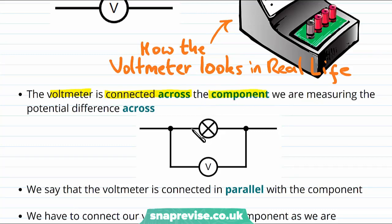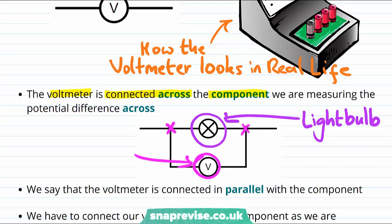So let's say we want to know the potential difference across a light bulb. Then we take the voltmeter and we connect it across this component. Another way of saying this is we can say that the voltmeter is connected in parallel with the component.